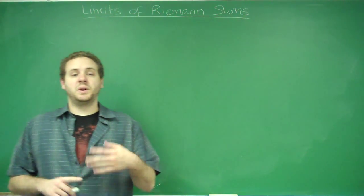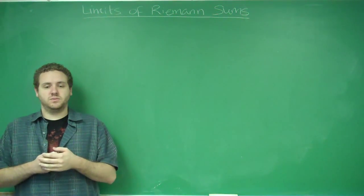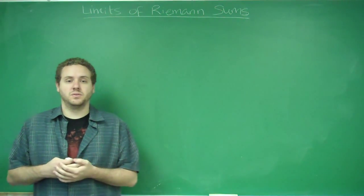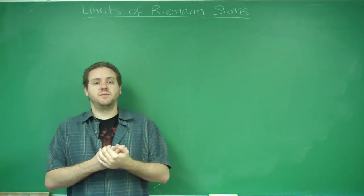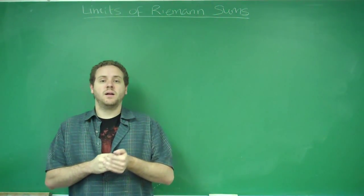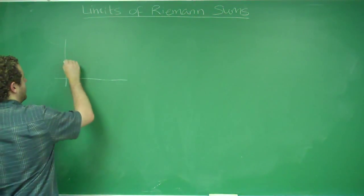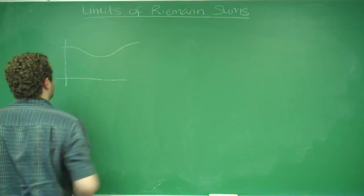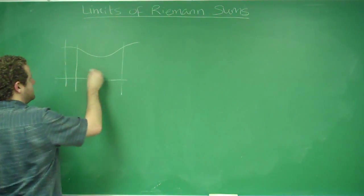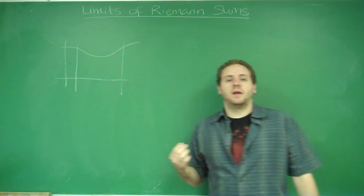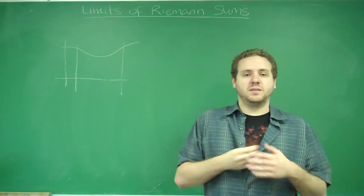Riemann sums is something we went over in another video, where you take rectangles to estimate the area under a curve. What we're going to do now is show how the limit of that sum is equal to the definite integral, and how to evaluate that sum. When you're doing the Riemann sum for a given curve, you estimate with rectangles in your interval, split it into however many rectangles, multiply the width and the height to get the area, add up the areas, and you'll get the estimation.